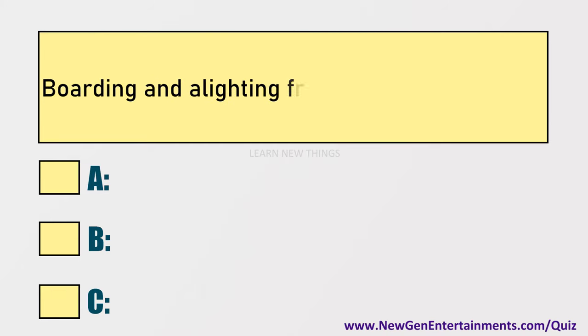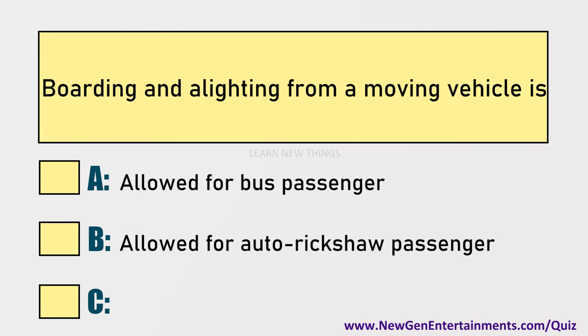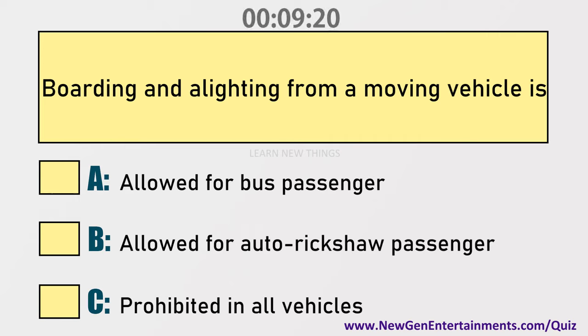Boarding and alighting from a moving vehicle is: Options are: A) Allowed for bus passengers, B) Allowed for auto rickshaw passengers, C) Prohibited in all vehicles.